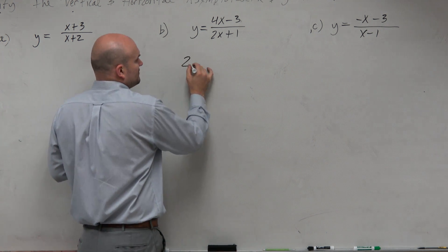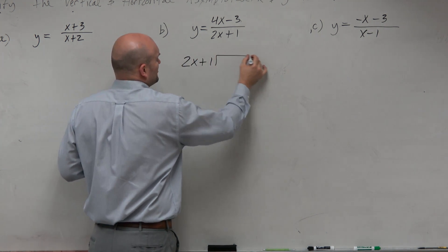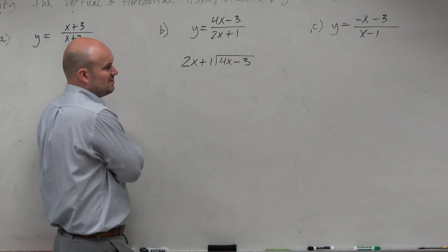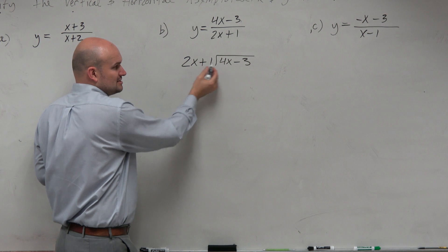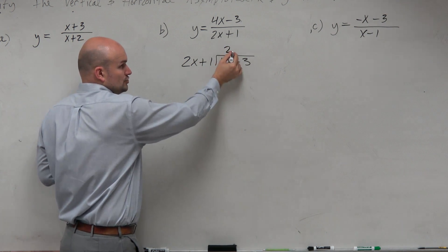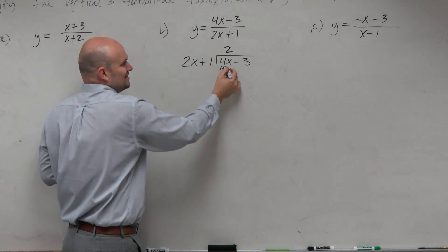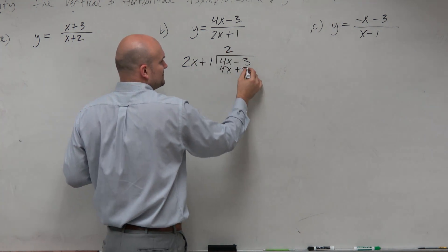So I'm going to use long division. You could use synthetic division, but I really wouldn't recommend it. It's just usually quicker this way. It's not going to be too much. How many times is 2x divided into 4x? Two times. 2 times 2x is 4x. Always got to get the same answer. 2 times 1 is positive 2.